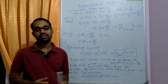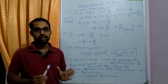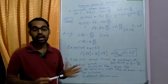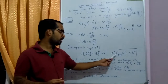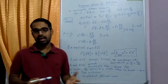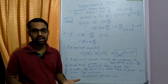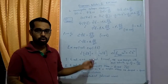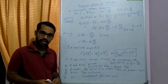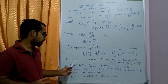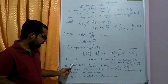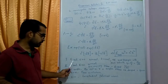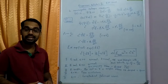Now we consider different cases where epsilon can take different values, giving different modes. Sometimes epsilon can be real, imaginary, or complex, leading to different conditions. In the first case, epsilon is real and greater than zero, and omega is also real. Then from the dispersion relation, k will also be real.